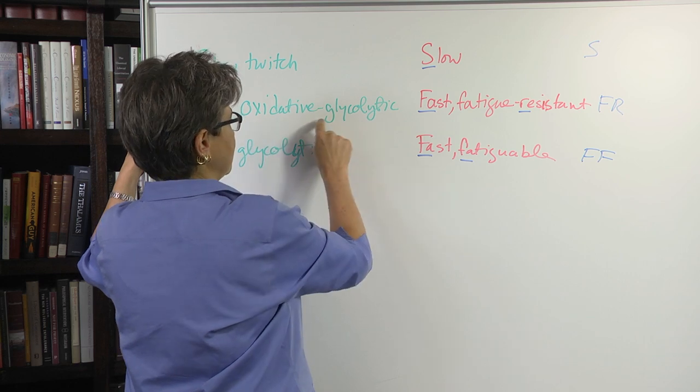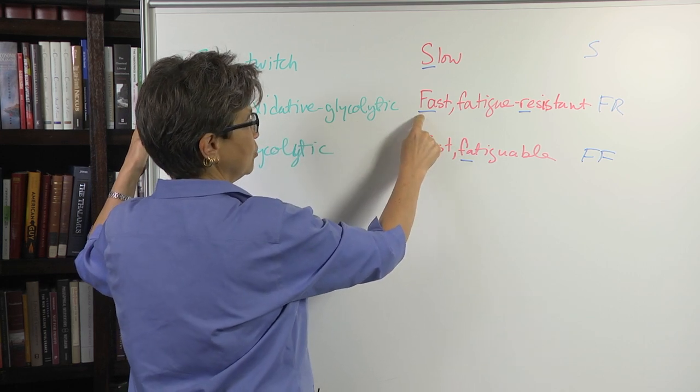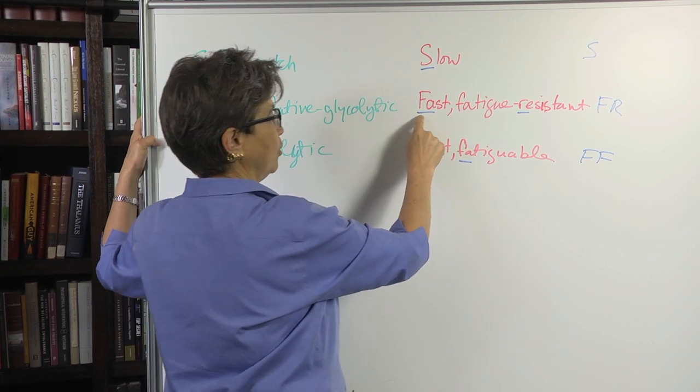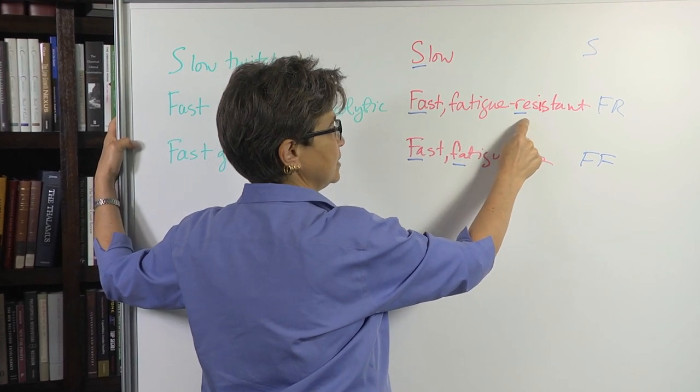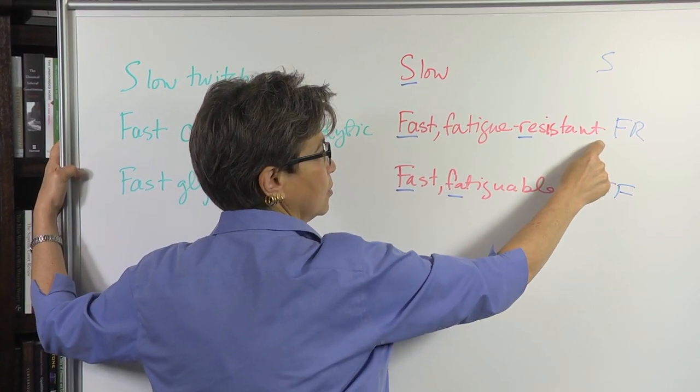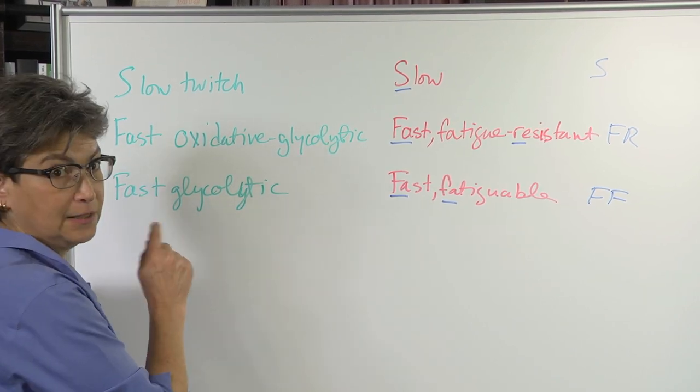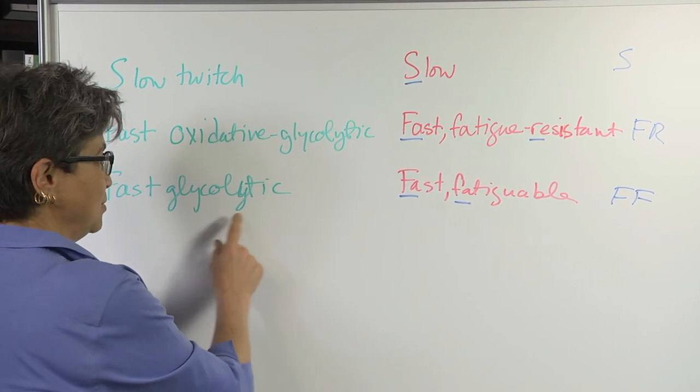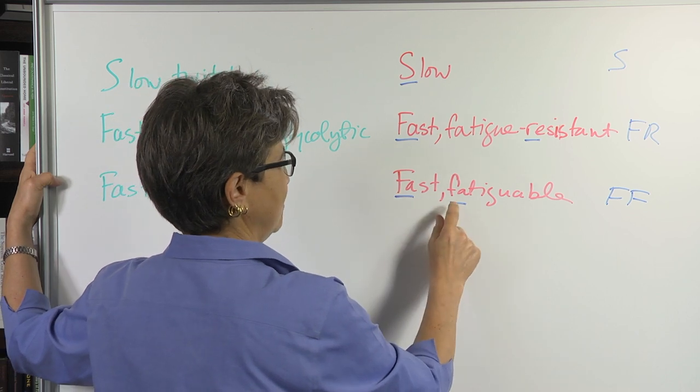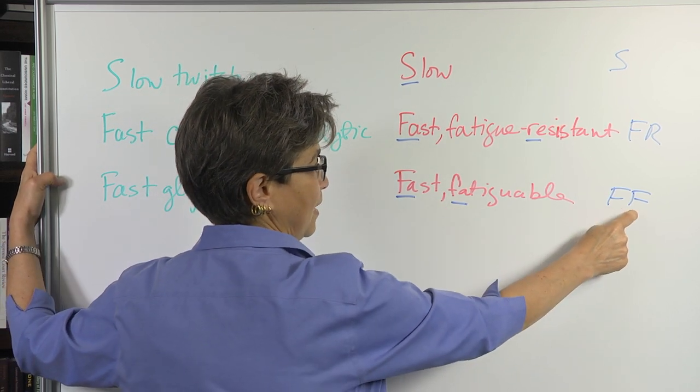And then the fast oxidative glycolytic, the motor neurons that innervate these are called fast fatigue resistant, so FR, abbreviated as FR. And the fast glycolytic muscle fibers are innervated by fast fatigable motor neurons, FF.